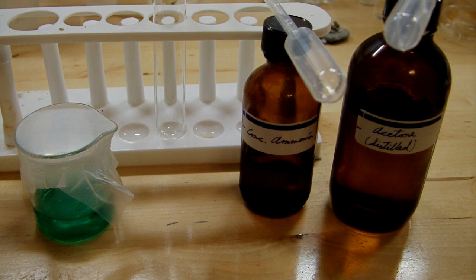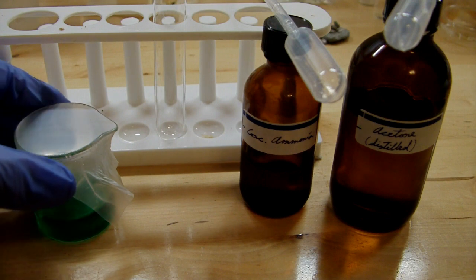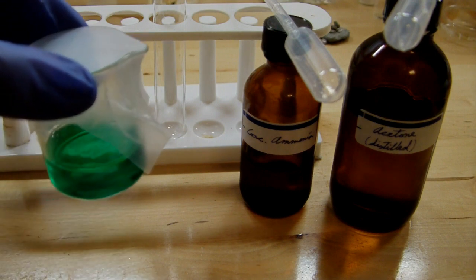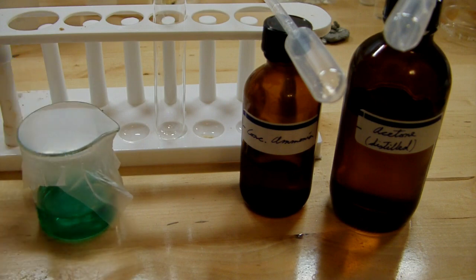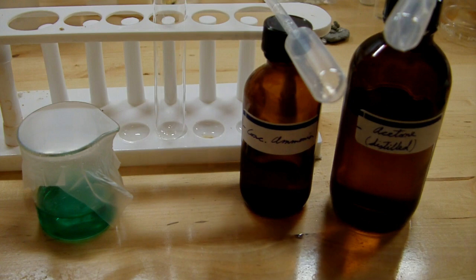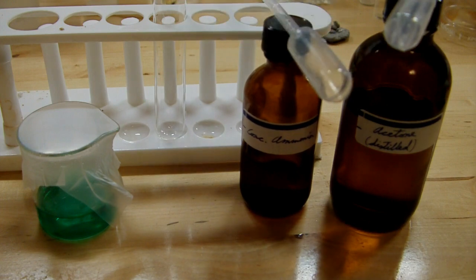It's actually very simple to make. It's a complex between nickel chloride and ammonia. So all we need here is a concentrated solution of nickel chloride, nice emerald green, and we're going to combine that with concentrated ammonia solution and acetone, which I distilled in my previous over-the-counter purification video.